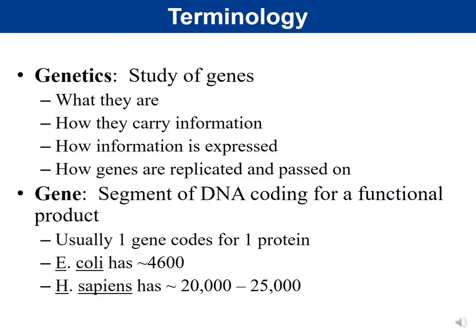E. coli has about 4,600 genes — estimates vary, but that's what's listed in the textbook. Homo sapiens have about 20,000 to 25,000 genes. Interestingly, mustard plants have more genes than humans, yet we're considered more complex. Humans can do alternative splicing — taking one gene and cutting it in multiple ways to produce more than one protein from that one gene.